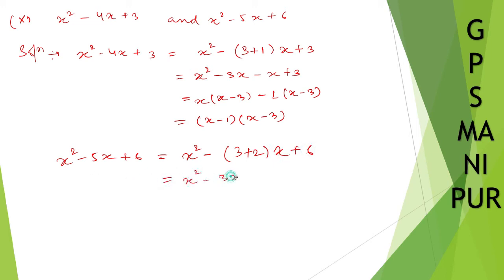So x square minus 3x minus 2x plus 6. So take x common, so it will be x minus 3, minus 2 common, it will be x minus 3. So x minus 2, x minus 3.